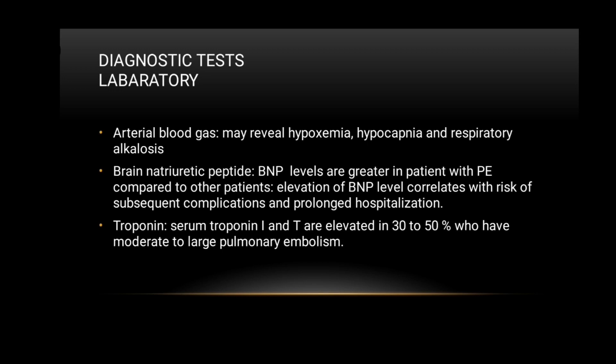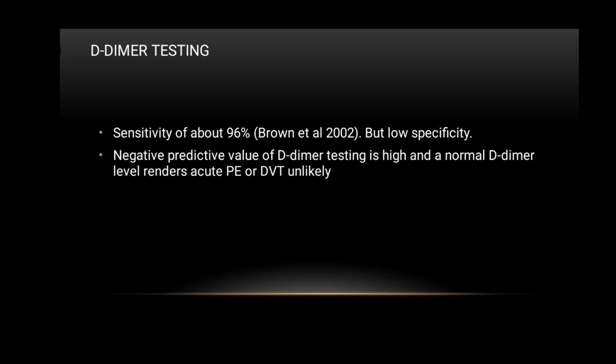In diagnostic tests and laboratories, arterial blood gas may reveal hypoxemia, hypocapnia, and respiratory alkalosis. BNP levels are greater in patients with pulmonary embolism, and elevations correlate with risk of subsequent complications and prolonged hospitalization. Serum troponin I and T are elevated in 30 to 50% of patients with moderate to large pulmonary embolism. D-dimer testing has a sensitivity of about 96% but low specificity; its negative predictive value is high, and a normal D-dimer level renders acute PE or DVT unlikely.